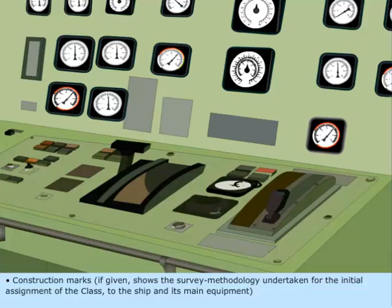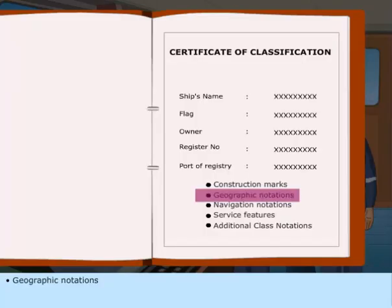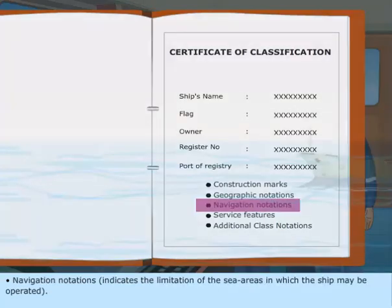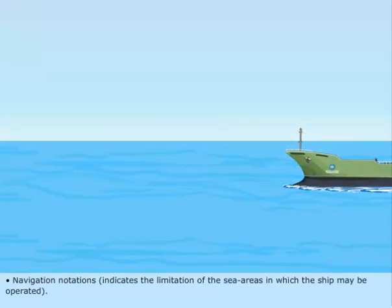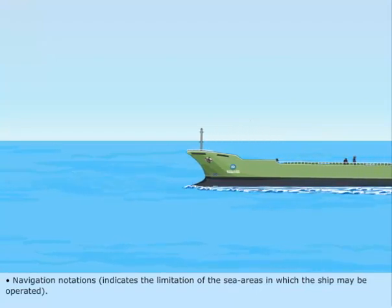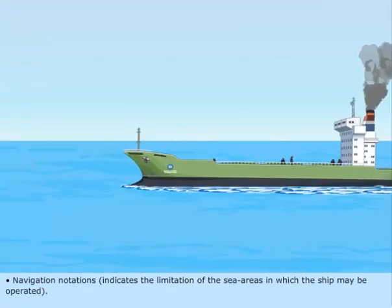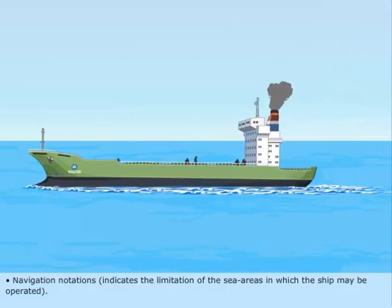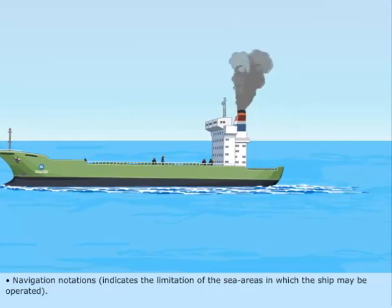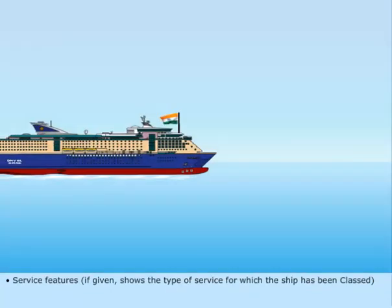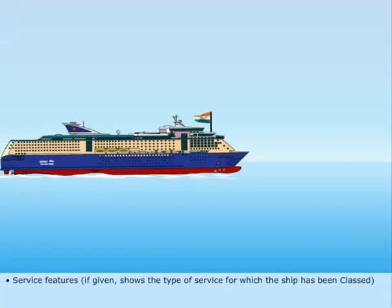Geographic Notations and Navigation Notations indicate the limitation of the sea areas in which the ship may be operated. Service Features, if given, shows the type of service for which the ship has been classed.